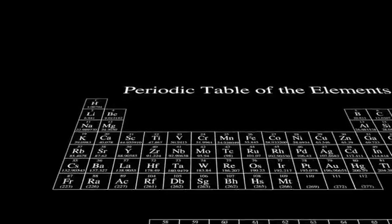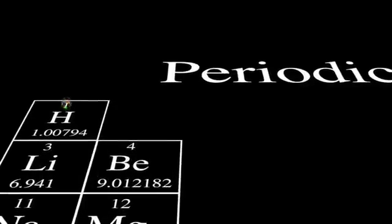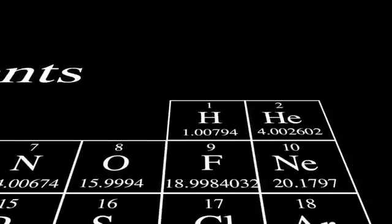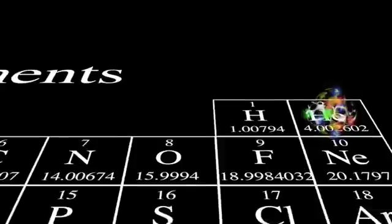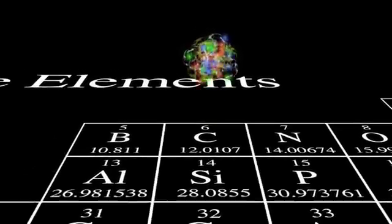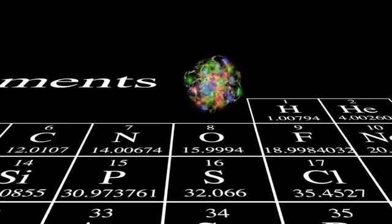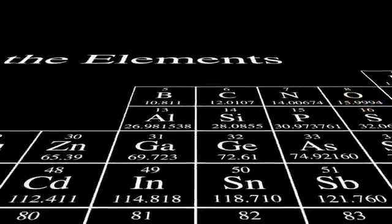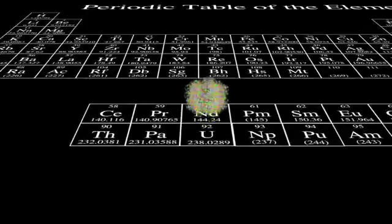These protons and neutrons can combine to form the nucleus of each element in the periodic table. One proton in the nucleus makes hydrogen. Two form helium. Six, carbon. Eight, oxygen. Seventy-nine is gold. And ninety-two, uranium.